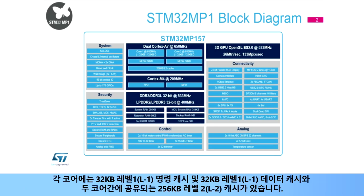Each core has a 32-kilobyte Level 1 instruction cache and a 32-kilobyte Level 1 data cache, plus 256 kilobytes of Level 2 cache shared between the two cores.